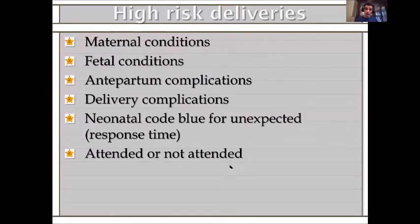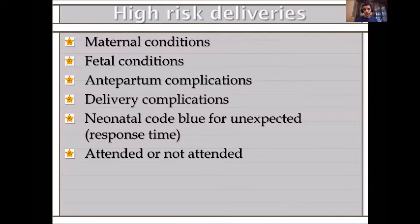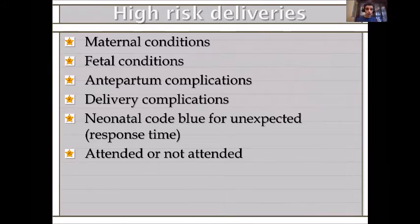It is very helpful when anticipating delivery to have a list of high-risk deliveries. These risks are related to maternal conditions, fetal conditions, anticipated antepartum complications, and delivery complications. You should also have a procedure to tackle unexpected deliveries — for example, a neonatal code blue — and from these lists, you decide whether to attend or not, and what to do if an emergency happens when you don't attend.